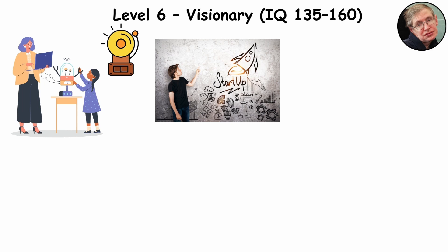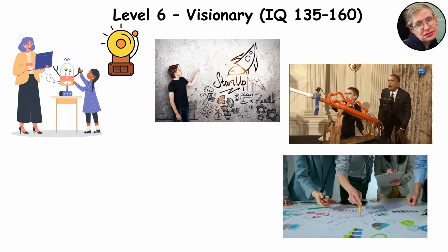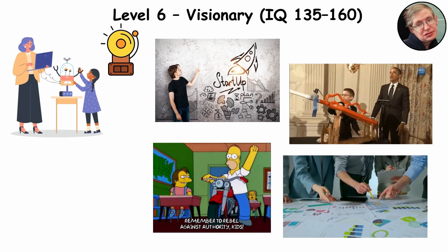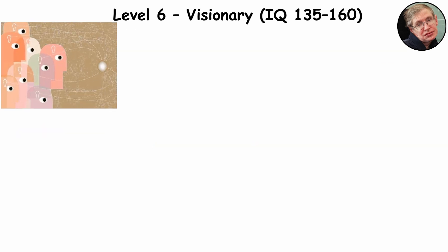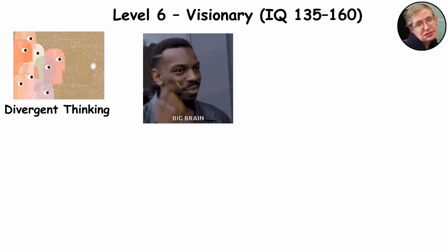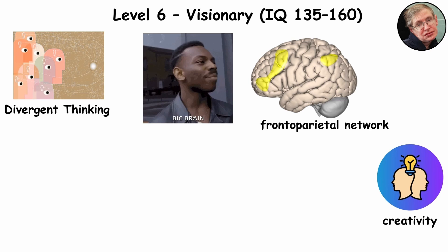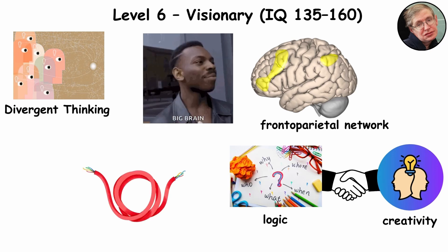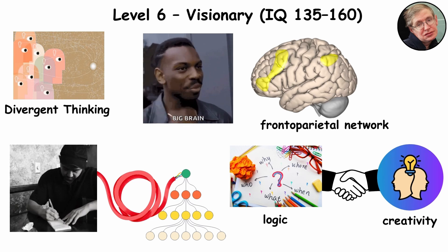They were the kids pitching inventions at recess, or asking if students and teachers wanted to get in early on their new startup idea. Their science fair project had moving parts. Their art assignment had a marketing plan. They didn't break rules to rebel. They broke them because the rules got boring halfway through. Inside their heads, divergent thinking goes into overdrive. That's the brain's way of generating ideas that don't yet exist. Neuroscientists point to the frontoparietal network, where creativity and logic shake hands. It's the rare wiring that lets someone invent a new algorithm and write poetry about it on the same afternoon.